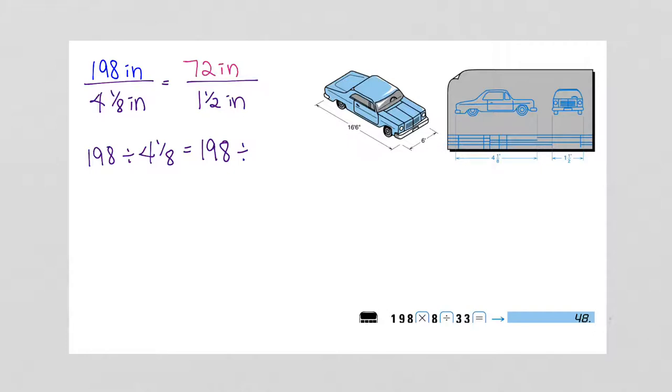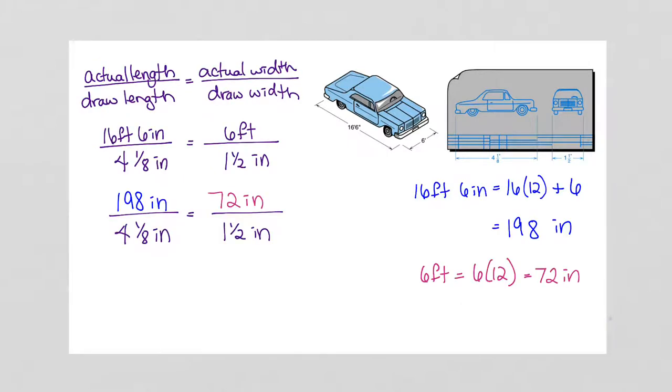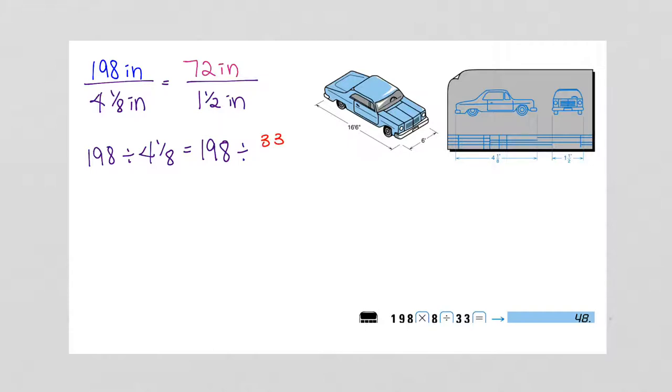We can't divide by 4 and 1 eighth by hand. We have to change that to an improper fraction before we can divide. So 4 and 1 eighth: on the top, you do 4 times 8 plus 1, and the bottom stays the same. 4 times 8 is 32, add 1, 33 over 8. That's how we change a mixed fraction to an improper fraction.